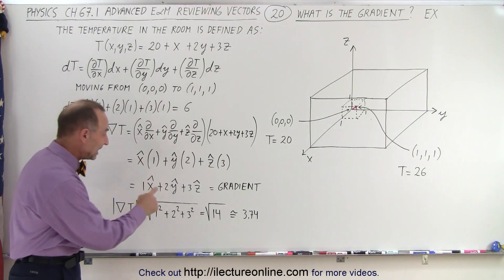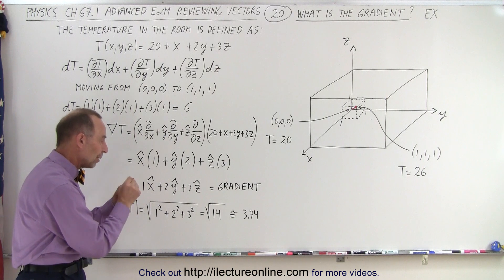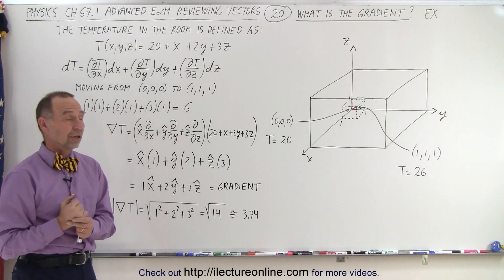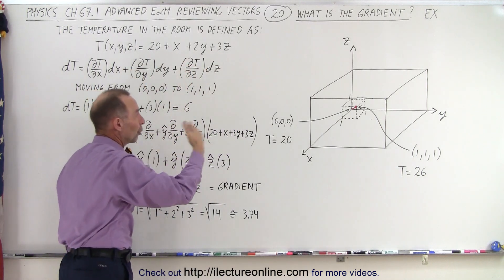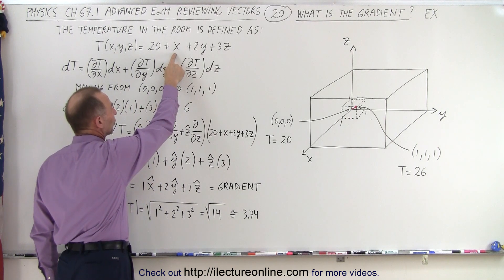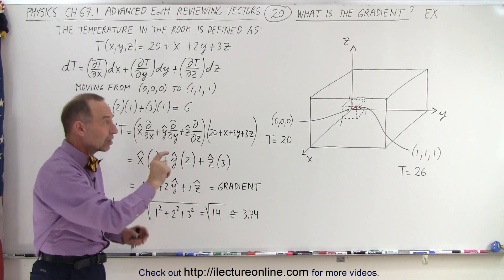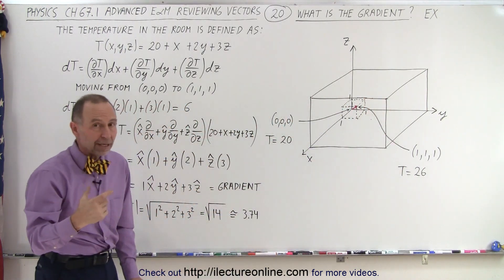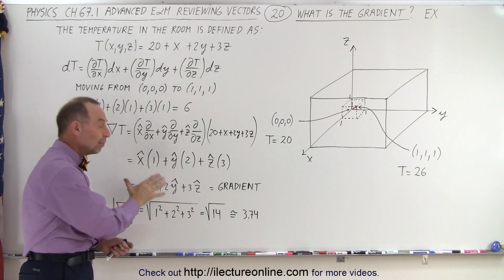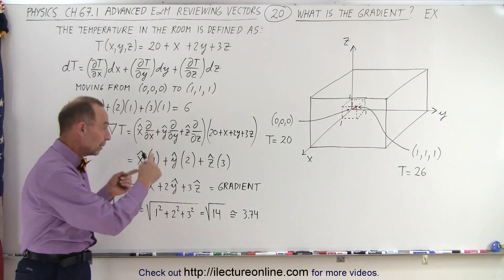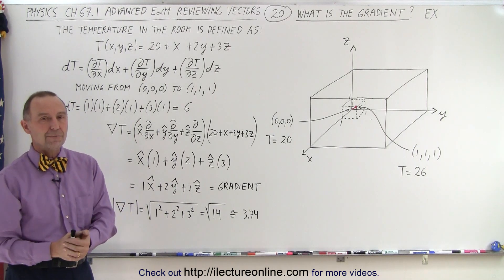For a unit change in this direction, we get a temperature change of 3.74 degrees — the largest change possible when moving from one point to another along this vector or parallel to it. This applies anywhere in the room because we have a linear scalar function, so the gradient is a constant vector throughout the room. For a non-linear function — like x squared or y squared — the partial derivatives would cause the gradient vector to change in both magnitude and direction as we move through the room, requiring different directions of travel to achieve the largest temperature change. But in this simplified linear example, the gradient is constant: moving in the (1, 2, 3) direction always gives the largest temperature change. And that is what we mean by the gradient.